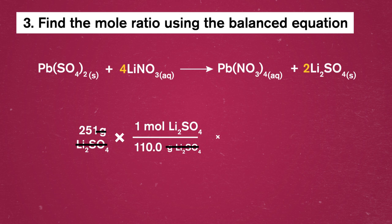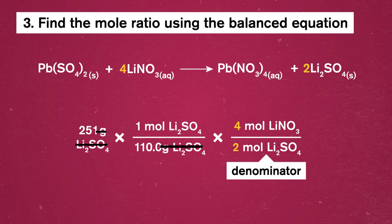As usual, in mole calculations, we'd write this into our equation so that the moles of the substance we have are in the denominator, and the moles of the substance we want to find are in the numerator. That way, our moles of lithium sulfate will cancel, leaving us with moles of lithium nitrate.